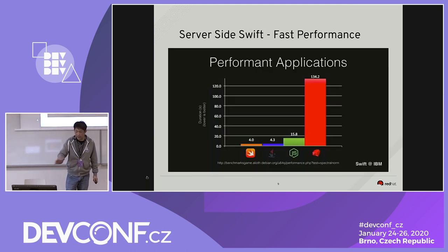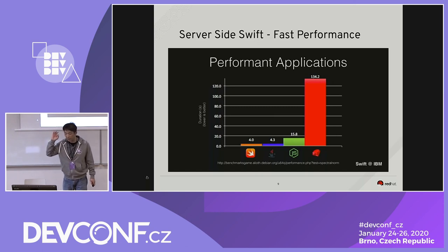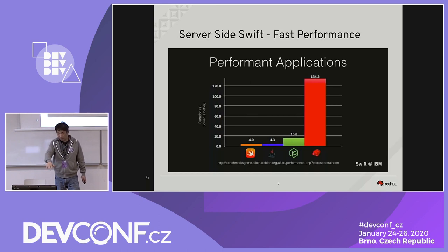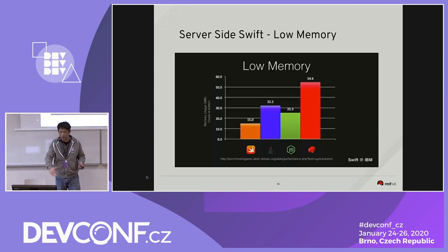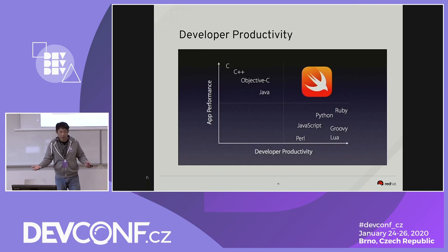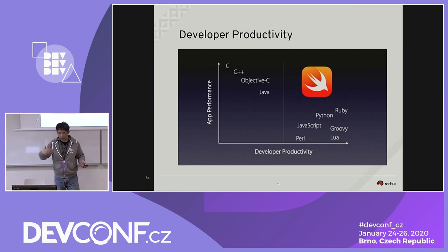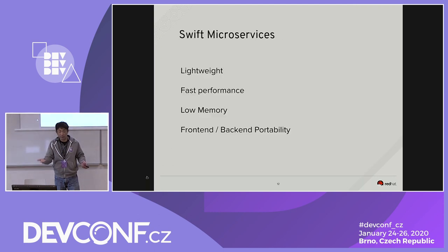Looking at performance analysis from the IBM website about Kitura, you can see a chart about application performance. The response time of Swift is amazing — comparing to Java, JavaScript, and Ruby, it has the fastest response time. The memory usage is also low; Swift has really low memory usage compared to Java, JavaScript, and Ruby. As for developer productivity, Swift has the highest productivity and the highest performance. Swift: lightweight, fast performance, low memory usage, front end and back end portability.